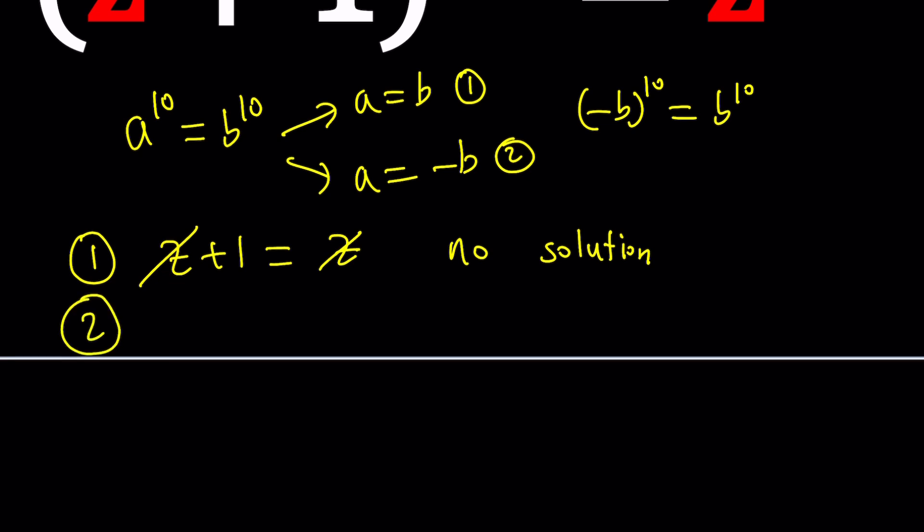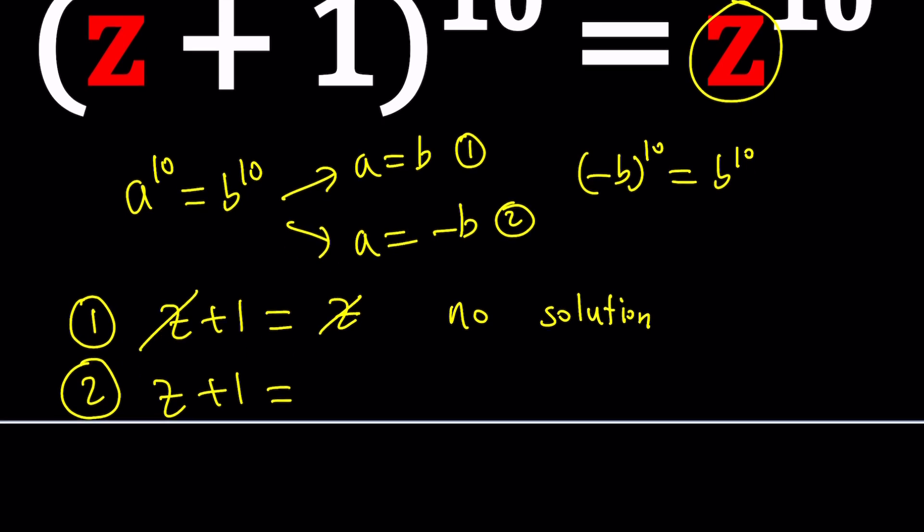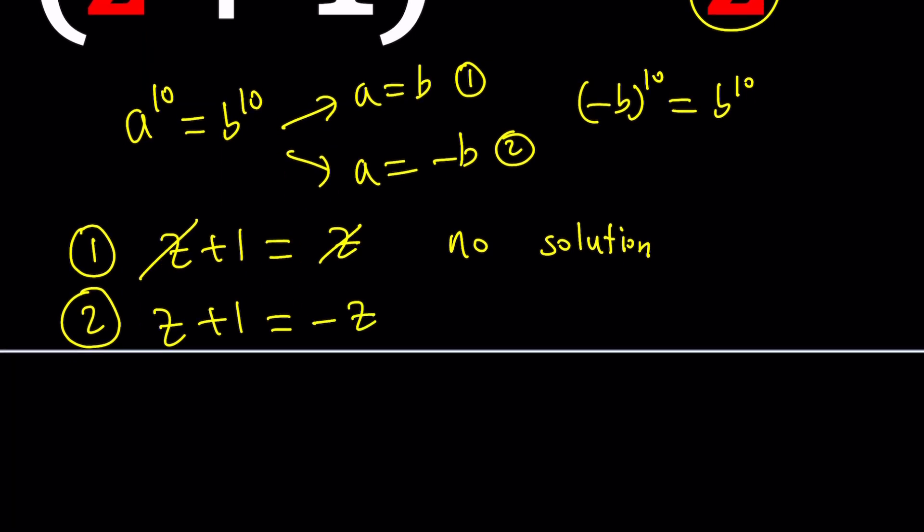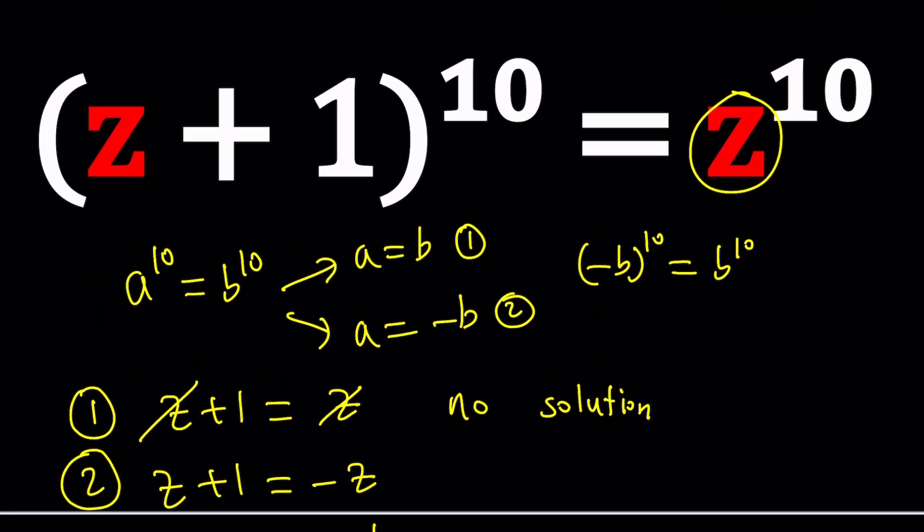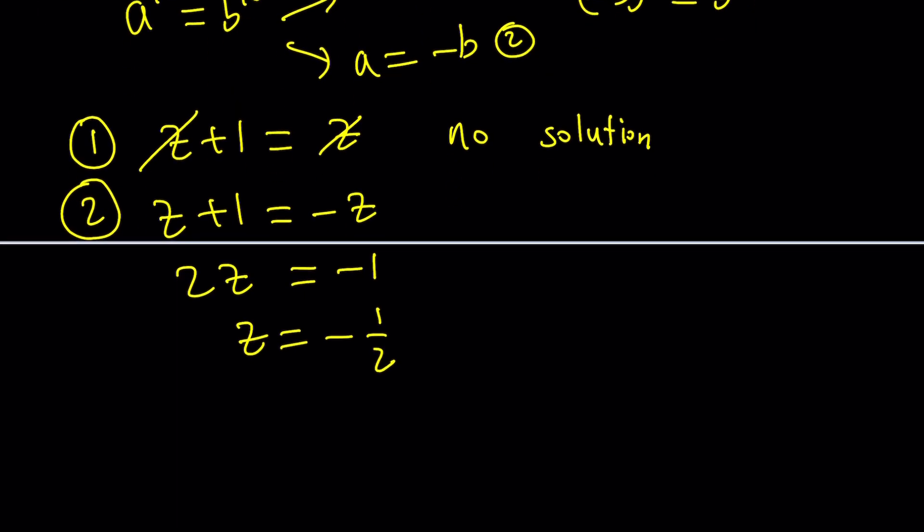What about the second case? The second case is where you consider the opposite of the base, which is negative z. And that's definitely going to give us something nice. Put the z's on the same side. 2z or not 2z. Do you see what I see? Equals negative 1 and z equals negative 1 half. And negative 1 half works because if you add 1 to negative 1 half, you get 1 half. And when you raise 1 half to the 10th power, it's the same thing as negative 1 half to the 10th power.